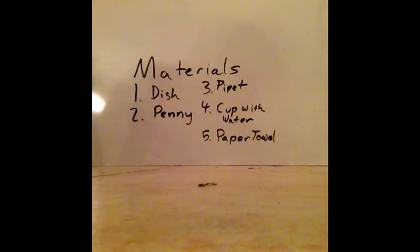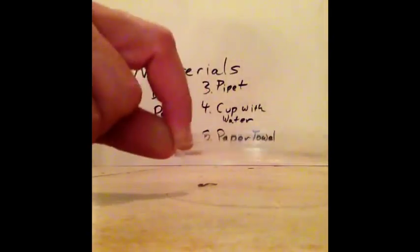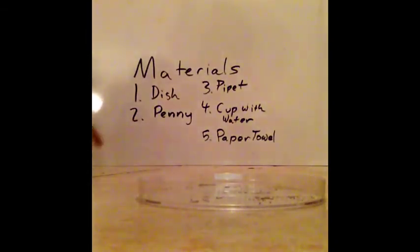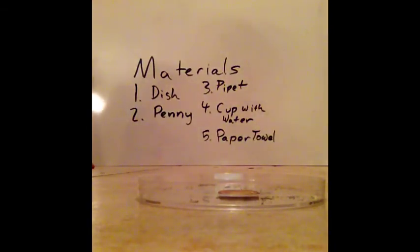A dish, which is part of a petri dish, just one half of a petri dish. A penny, which you're going to place in the dish. That's part of your procedure, so make sure you write that down.